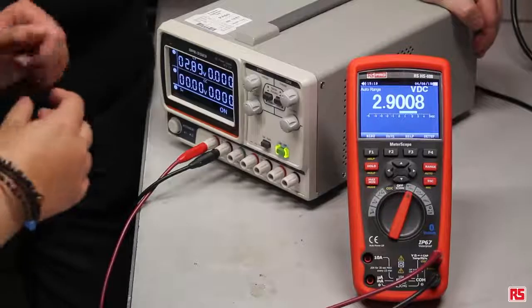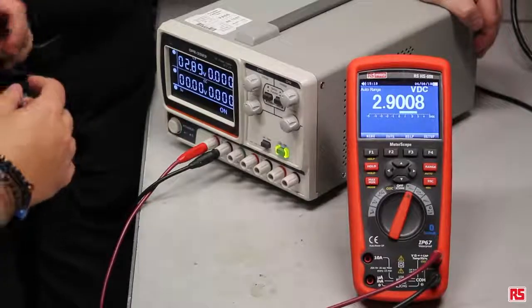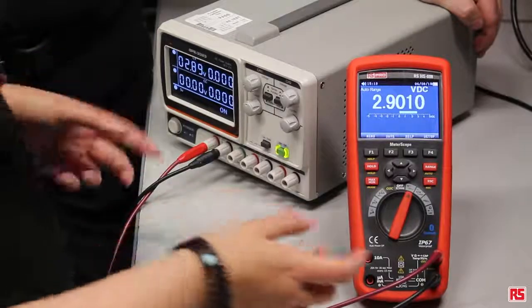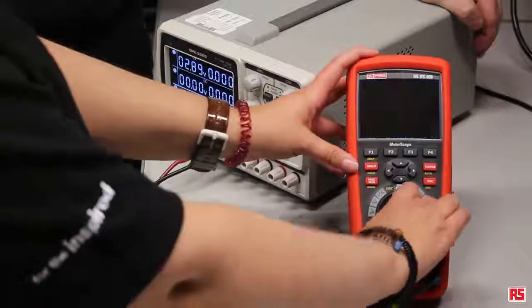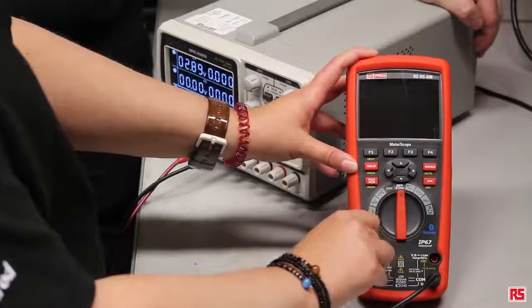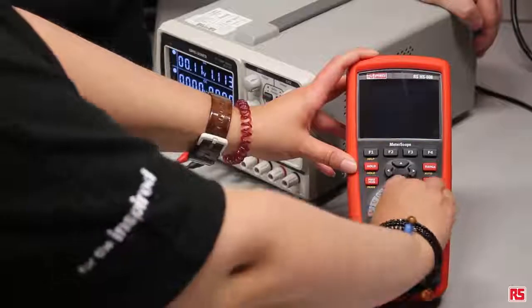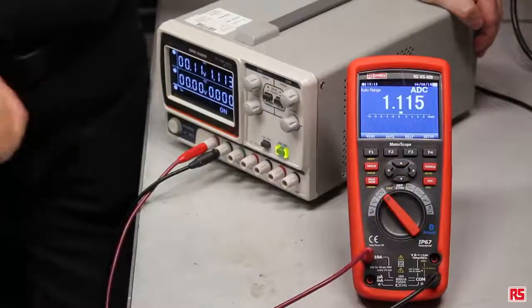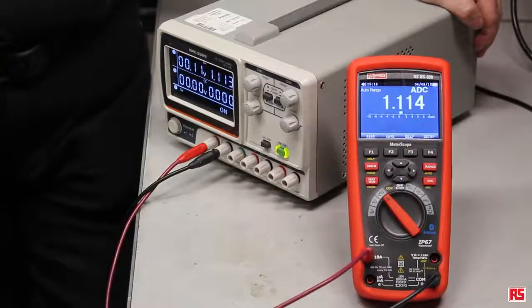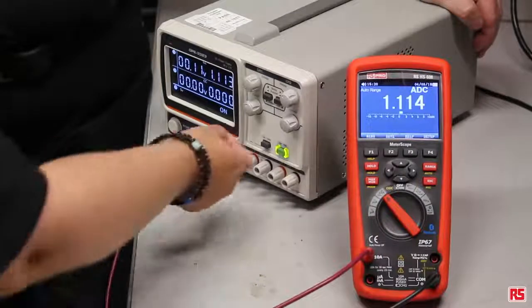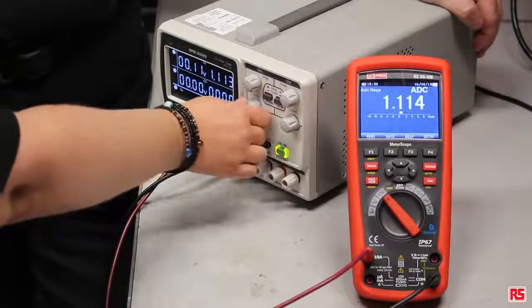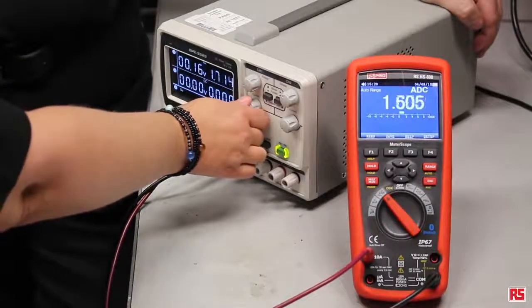Okay so we've just looked at the auto range on the voltage. Now we're going to look at the current measurement, so simple swap over. So now you can see that it is measuring the DC current. Change that up and you can see again that it's auto ranging.